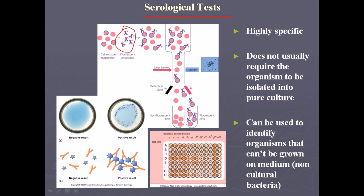Suppose this is our known antibody. These orange-colored antibodies are our known antibodies, and we know they were produced by bacteria A. Now suppose we have a new unknown bacteria — let's call it UB — and this unknown bacteria produces an antigen.